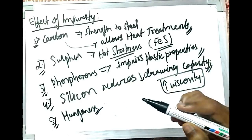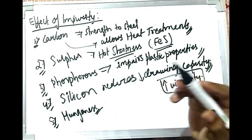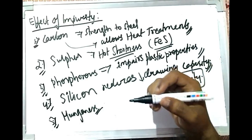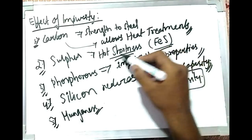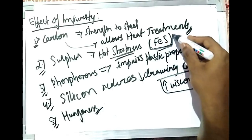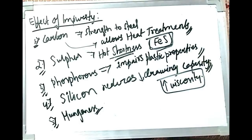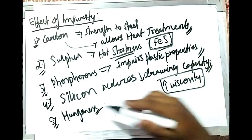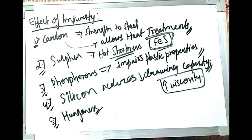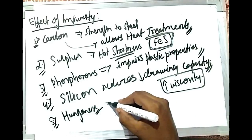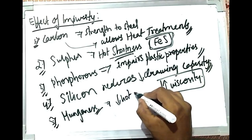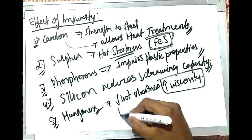Some amount of manganese is actually required because it increases toughness without affecting ductility, and sharply reduces hot shortness. Manganese reacts with compounds like FeS that cause hot shortness, breaking them into individual simple ions, thereby decreasing hot shortness. That is why manganese is considered beneficial.